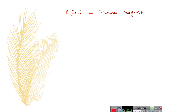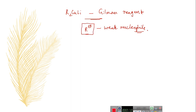This Gilman's reagent has a nucleophile, that is R minus, which is a weaker nucleophile because it is connected to a copper atom, which has a lower percentage of ionic character. That's why the nucleophile present in Gilman's reagent is a weak nucleophile. It can involve in two different types of reactions: substitution reactions and conjugate addition reactions.